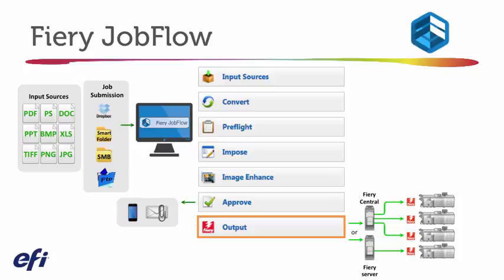One other distinction with Jobflow compared to hot folders is it also allows you to select one of your source locations to archive the file. So it's really taking what you're able to do with hot folders and giving you added flexibility with how you're receiving files, what you're able to do with the files, and how you're able to handle communications.